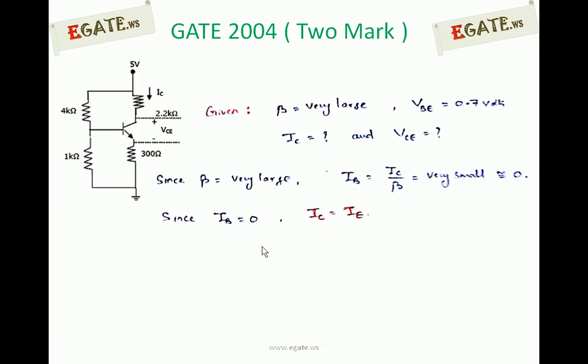This is very important. When β is given as large, that implies nothing but simply you can neglect the base current. Why? How? IB is equal to IC by β. Whereas β is very large, so IC by very large is nothing but you are going to get it as very small. That very small can be neglected, so IB is equal to 0. Simply whenever β is very large is given in any question, you can neglect the base current. Whenever base current is neglected, the important conclusion is collector current is nothing but emitter current. So IC is equal to IE.